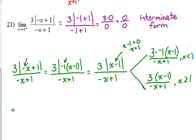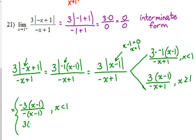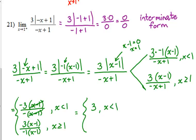Let's simplify these expressions. We've got negative 3 times x minus 1 on the top, so let's factor a negative out of the bottom as well. The x minus 1 cancels. The top piece becomes positive 3 because negative 3 divided by negative 1 is positive 3, and the bottom piece is negative 3. So 3 times the absolute value of negative x plus 1 over negative x plus 1 equals 3 when x is less than 1, and negative 3 when x is greater than or equal to 1.